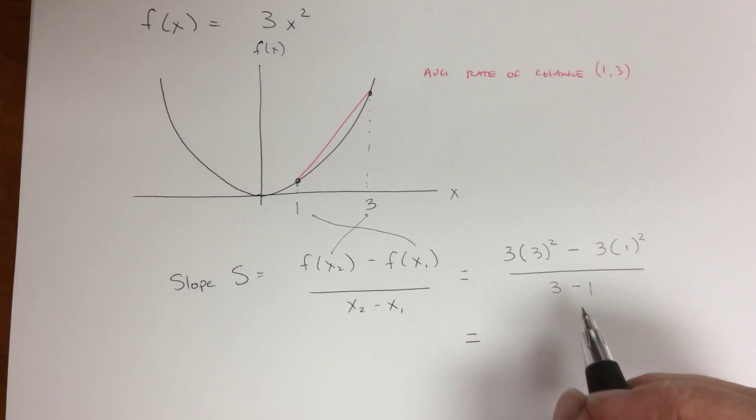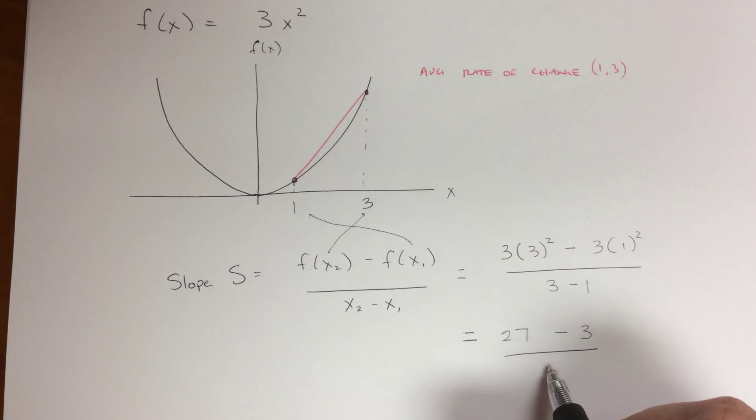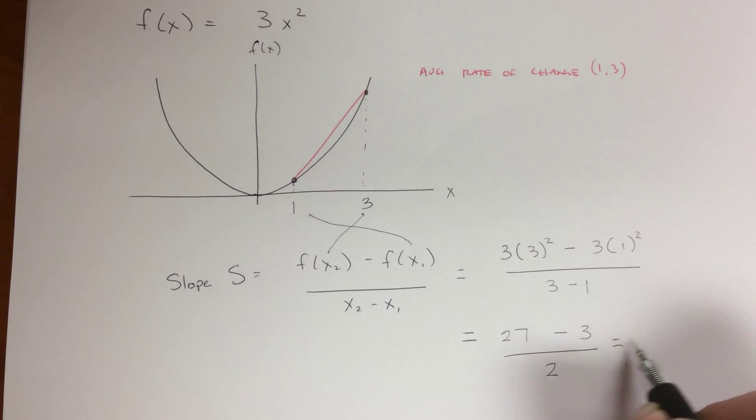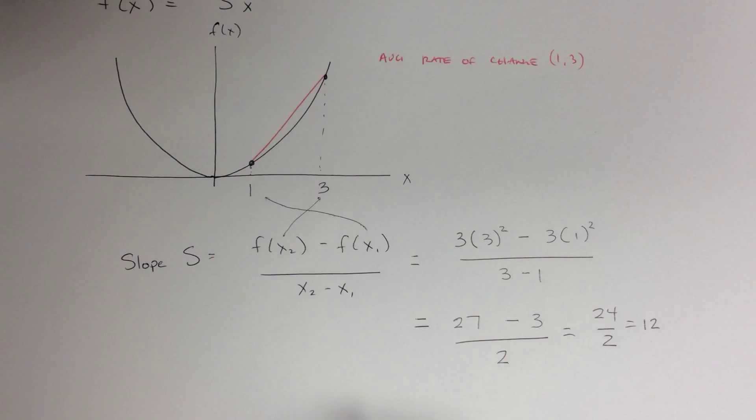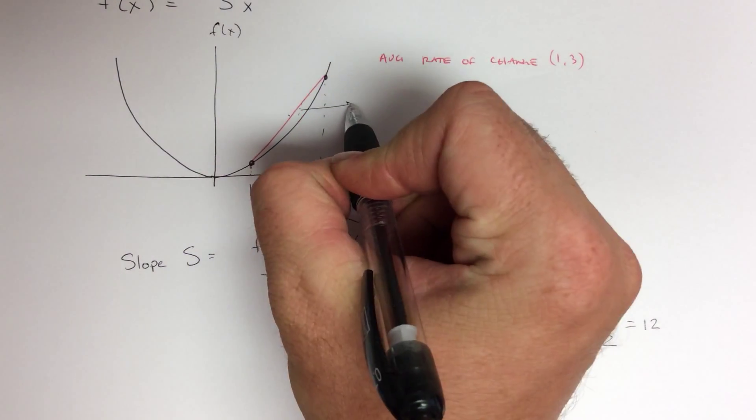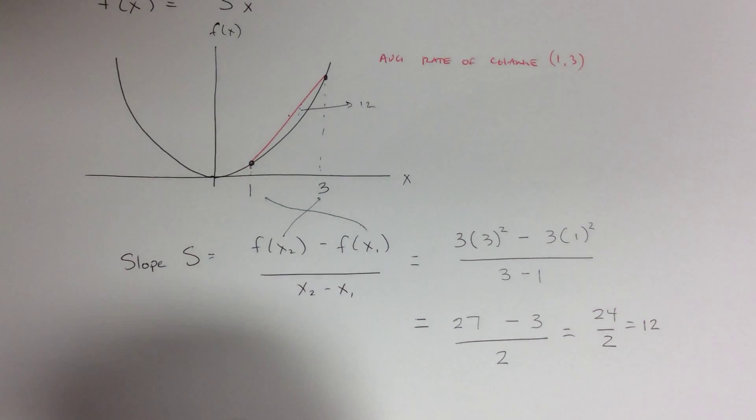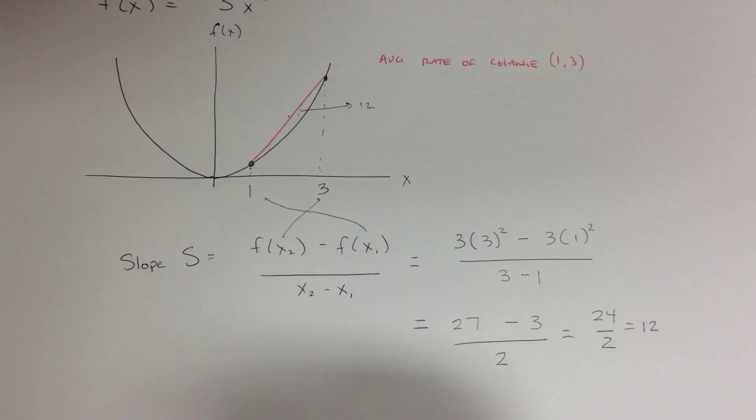So this is equal to 9 times 3, which is 27, minus 1 squared times 3, which is 3, all over 2. So this is equal to 24 divided by 2, which is equal to 12. And what that 12 tells us is the slope of this line right here is 12, or the average rate of change between the points 1 and 3 is 12.